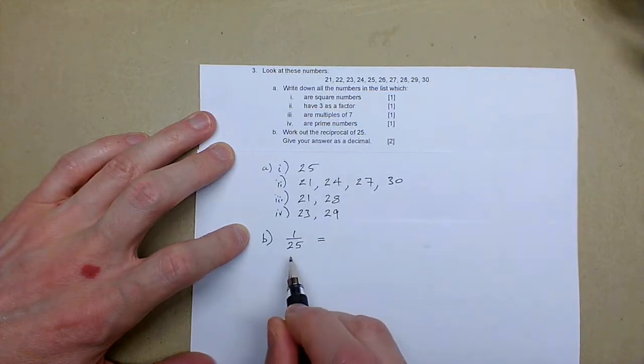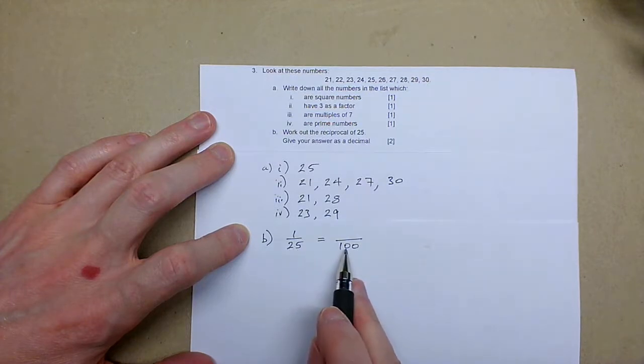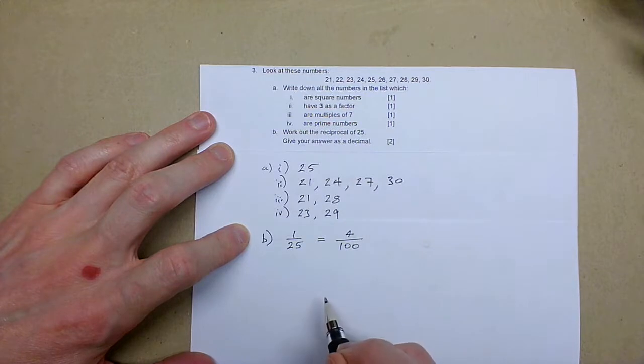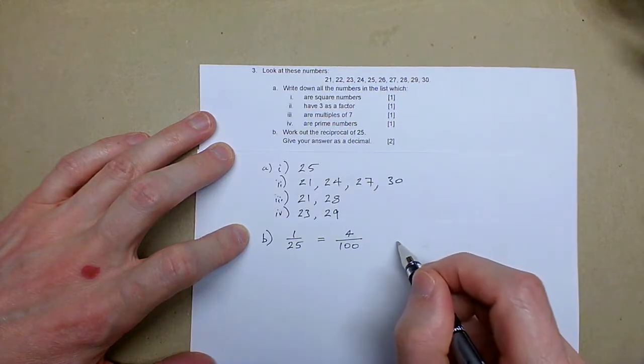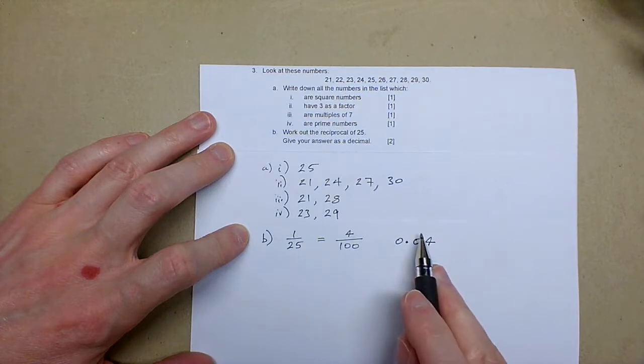I'm now going to use equivalent fractions to put this over 100. Multiply this by four, so I need to multiply the numerator by four, and I now have four hundredths, so 0.04. Tenths column, hundredths column, four hundredths.